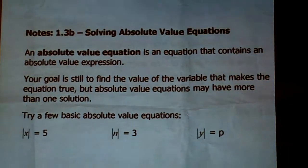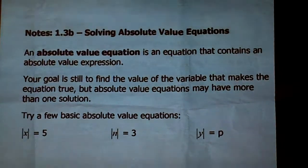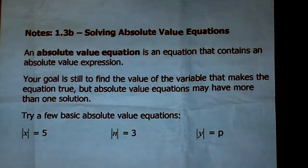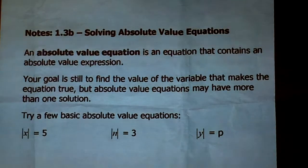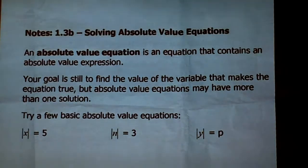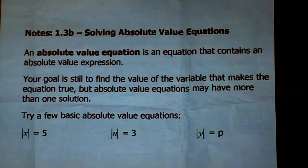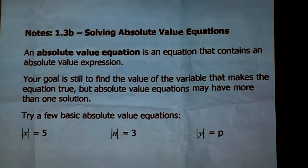Your goal is still the same — you want to figure out what value of the variable makes the equation true. But in an absolute value equation, you can have more than one answer. We already saw a special case of infinitely many, so now we're just talking two. Not so bad.